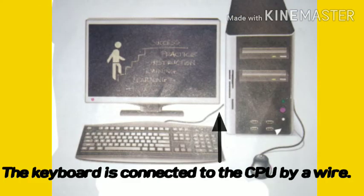So students, see the picture. These are the 4 main parts of the computer. Now, as you can see, the keyboard is connected to the CPU by a wire. But some keyboards are connected without a wire. They are wireless keyboards.